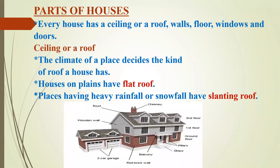Every type of house has a different structure. Every house has a ceiling or a roof, walls, floor, windows and doors. The climate of a place decides the kind of roof a house has. Houses on plains have a flat roof. Places having heavy rainfall or snowfall have a slanting roof, to prevent the collection of water or snow on the rooftop. In dry regions, houses are made up of mud and straw to keep the house cool.